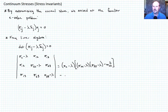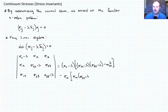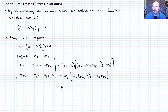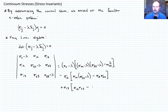Going along the top row, the next term is minus sigma_12 times the submatrix determinant: sigma_12 times (sigma_33 minus lambda) minus sigma_13 times sigma_23. Then the final term is plus sigma_13 times the quantity sigma_12 times sigma_23 minus sigma_13 times (sigma_22 minus lambda).